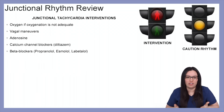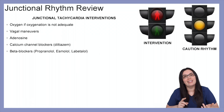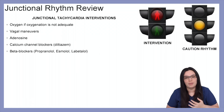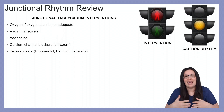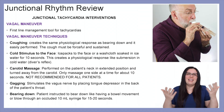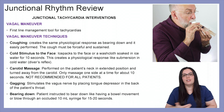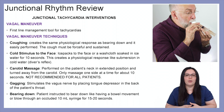Junctional tachycardia interventions include oxygenation if oxygenation is not adequate — less than 94%. We can consider vagal maneuvers, adenosine, calcium channel blockers such as diltiazem, as well as beta blockers. Vagal maneuvers are the first-line management when it comes to our tachycardias.